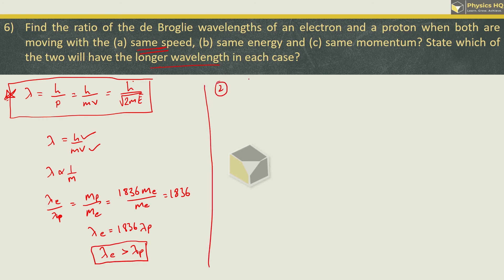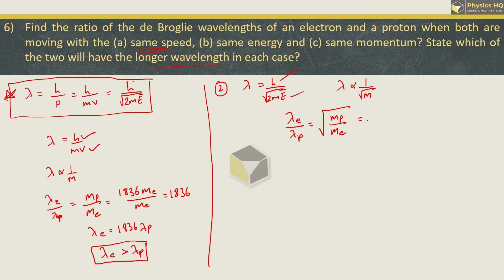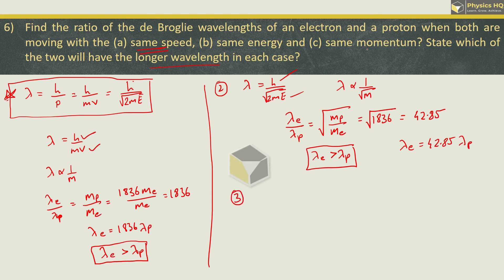In Case 2 (same energy), lambda equals h by root of 2mE. Since h and E are the same, wavelength is inversely proportional to root of m. So wavelength of electron upon wavelength of proton equals root of (mass of proton upon mass of electron) equals root of 1836, which is approximately 42.85. Again the electron has the longer wavelength. In Case 3 (same momentum), lambda equals h by p. Since both h and p are the same, the wavelength of electron equals the wavelength of proton.